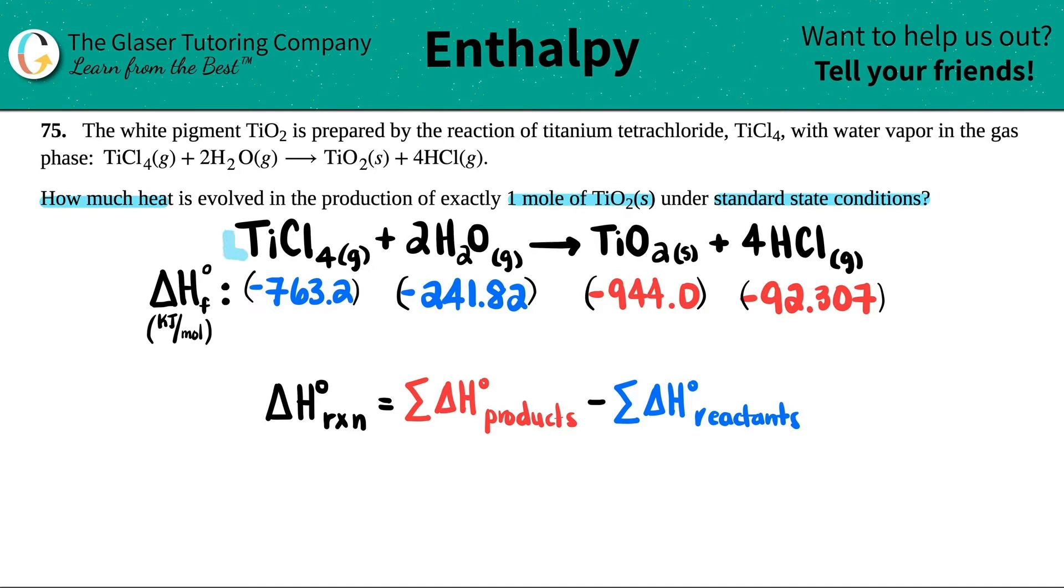So I have 1 TiCl4, right? I didn't see a number there, so it's just 1. So I multiply the negative 763.2 by 1. There were two H2O gases, so I'm going to multiply this number by 2. I don't see a number in front of TiO2, so that means there's 1. And then there's 4 HCls, so I multiply the negative 92.307 by 4.